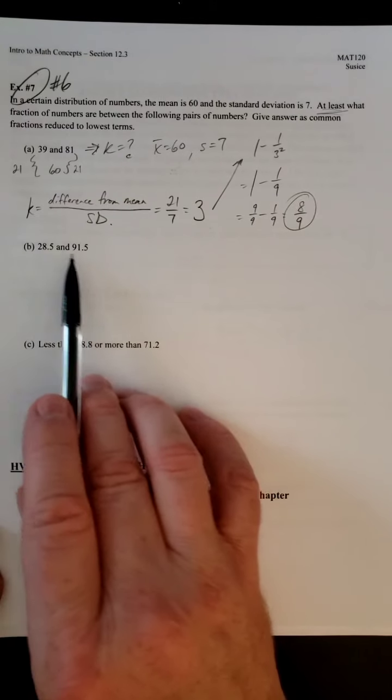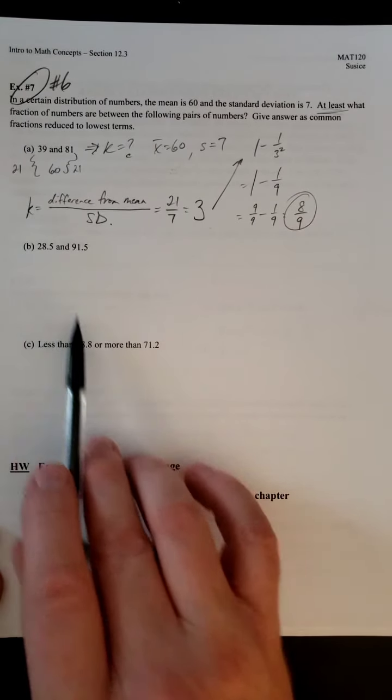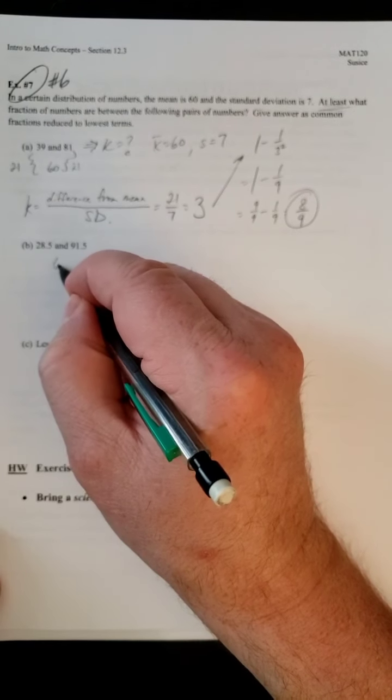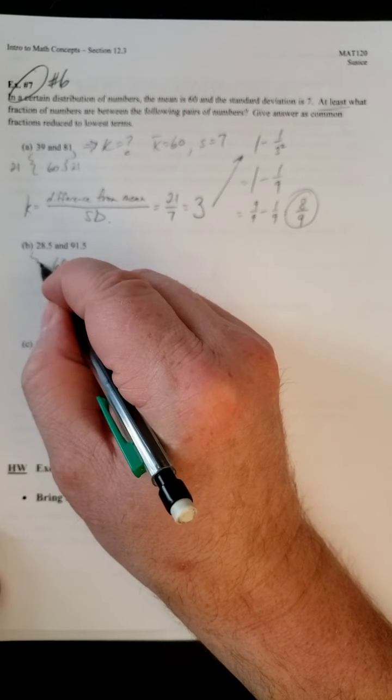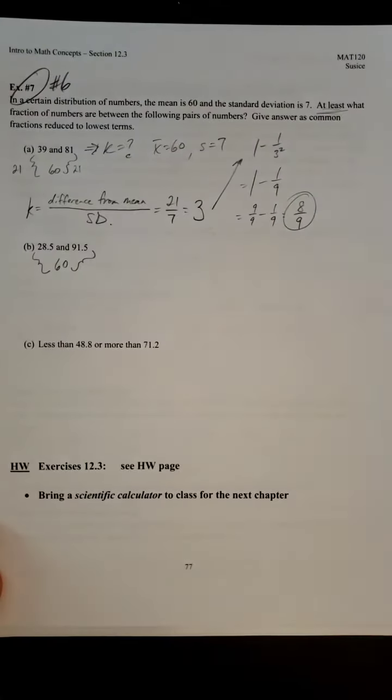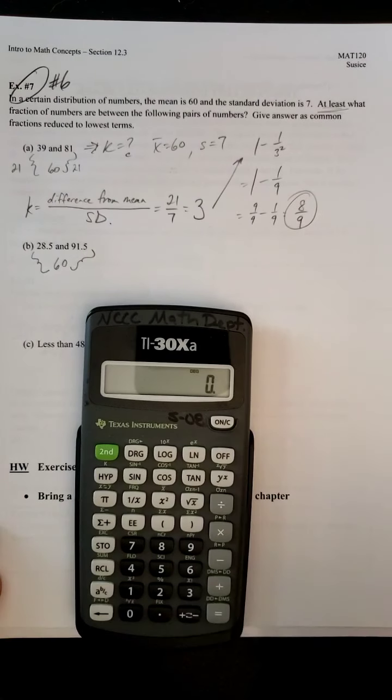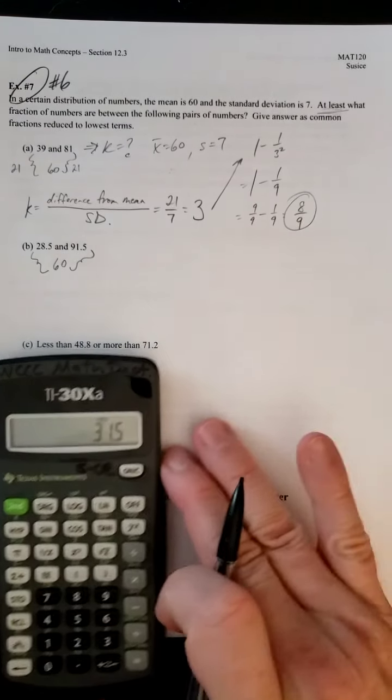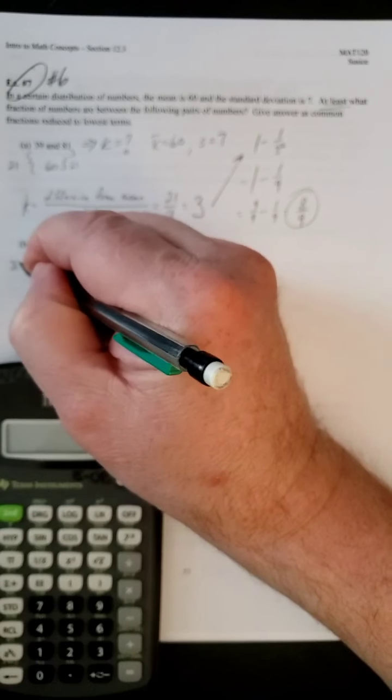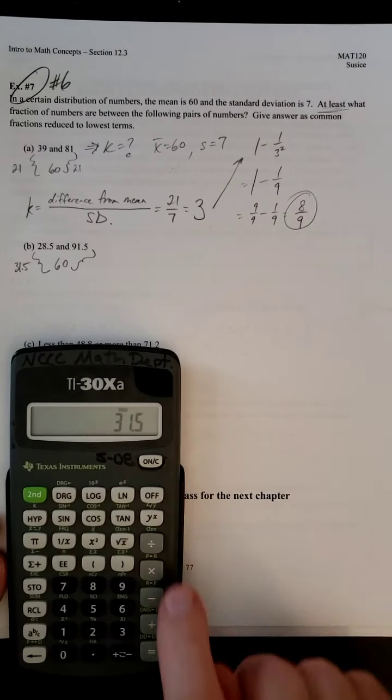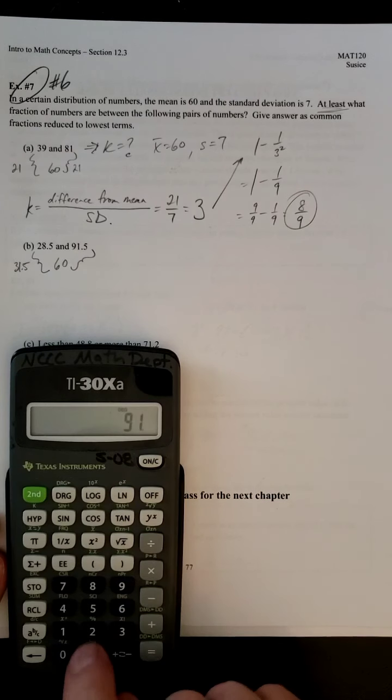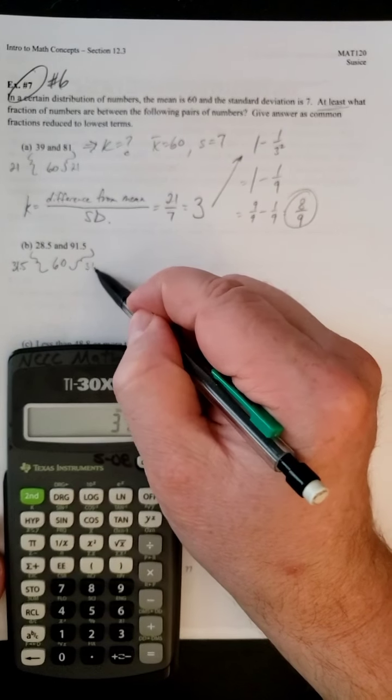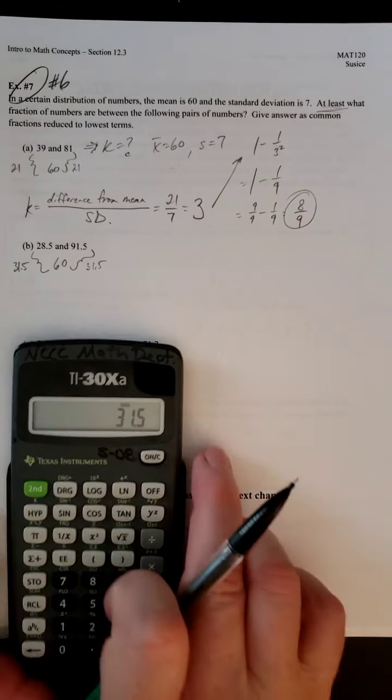Now it gets a little bit more interesting when we've got decimals. But the process is still the same. We've still got to look at what's the difference from the middle. So we're going to do a little bit of subtraction from both sides. If we say 60 minus 28.5, we get 31.5. And on the other side, 91.5 minus 60 is 31.5. So we do get the same result on both sides.